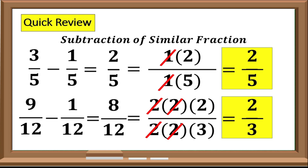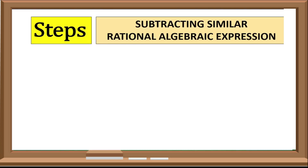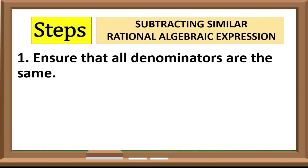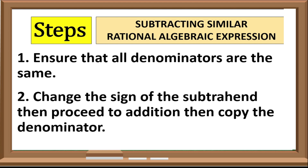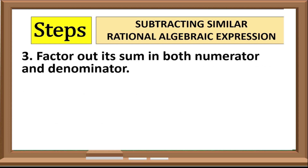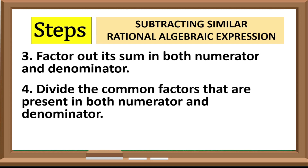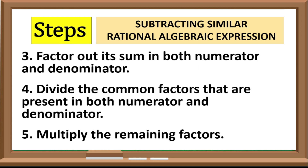I think you are ready now in subtracting similar rational algebraic expression. Step 1: Ensure that all denominators are the same. Step 2: Change the sign of the subtrahend, then proceed to addition, then copy the denominator. Step 3: Factor out its sum in both numerator and denominator. Step 4: Divide the common factors that are present in both numerator and denominator. Step 5: Multiply the remaining factors.